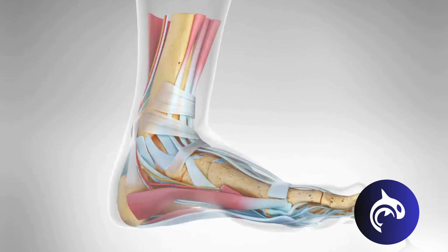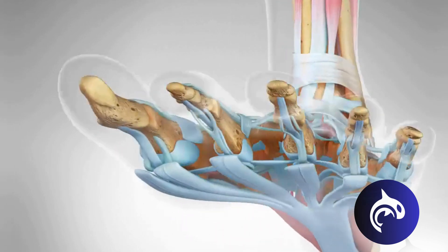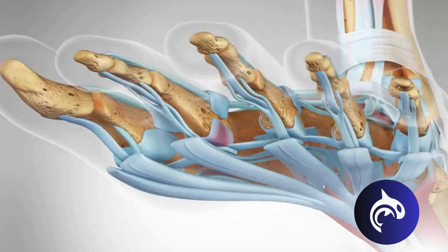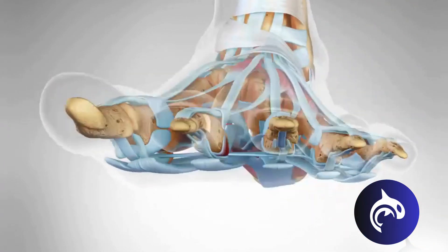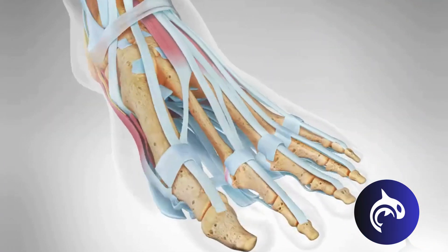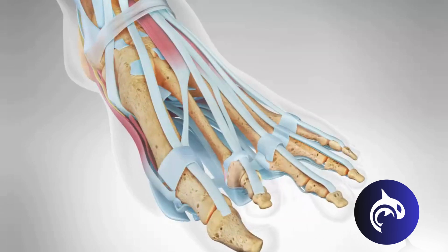Capsulitis, on the other hand, is caused by ligament inflammation and characterized by pain that feels like a pebble in the shoe at the ball of the foot. Prolonged capsulitis can result in deviation, with the second toe eventually crossing over the big toe.